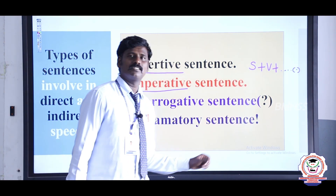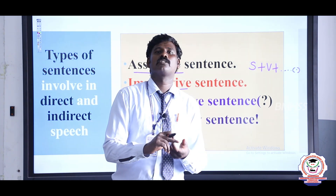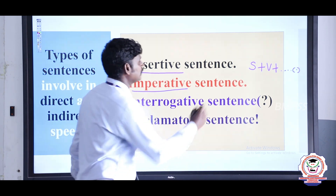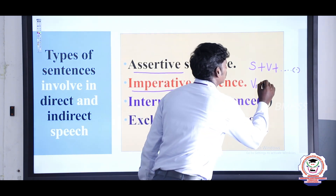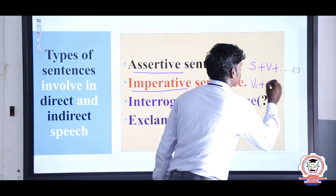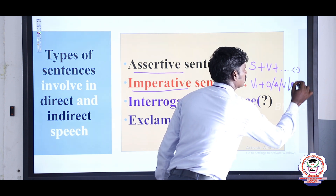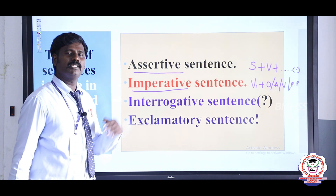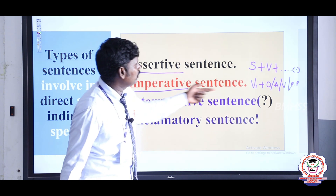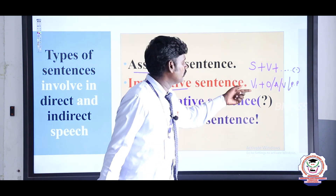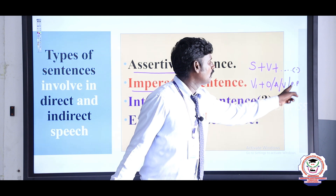Imperative sentence is used to ask others, to command others, to advise others, or to request others. We begin imperative sentences using the first form of the main verb, followed by elements like object, adjunct, verb, or preposition. So imperative sentence is used to ask, order, command, or advise others, beginning with V1.